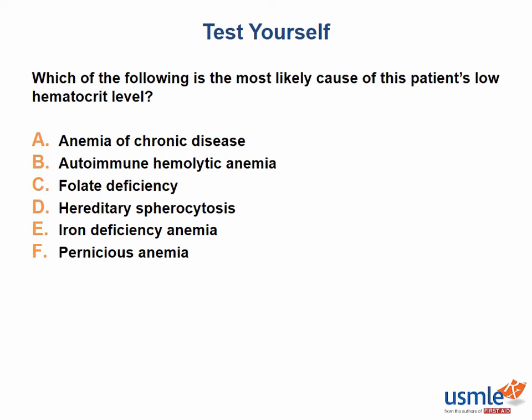The answer choices are: A) anemia of chronic disease, B) autoimmune hemolytic anemia, C) folate deficiency, D) hereditary spherocytosis, E) iron deficiency anemia, and F) pernicious anemia.